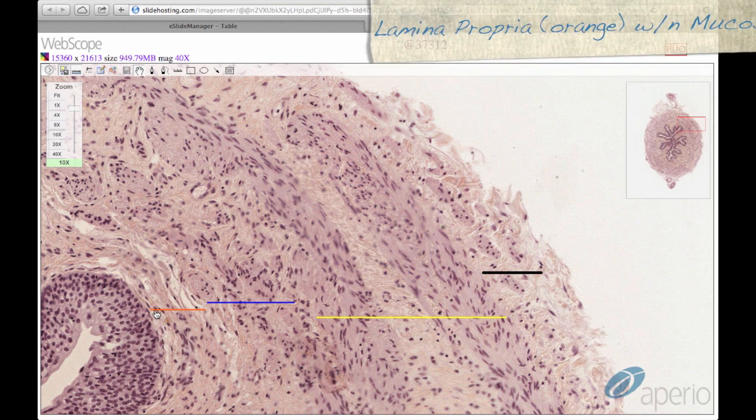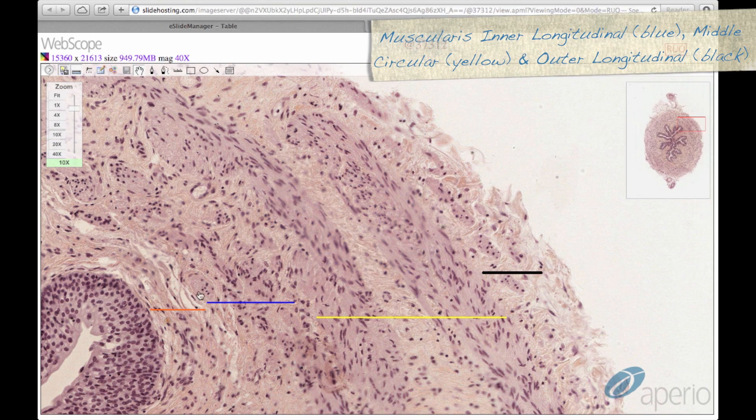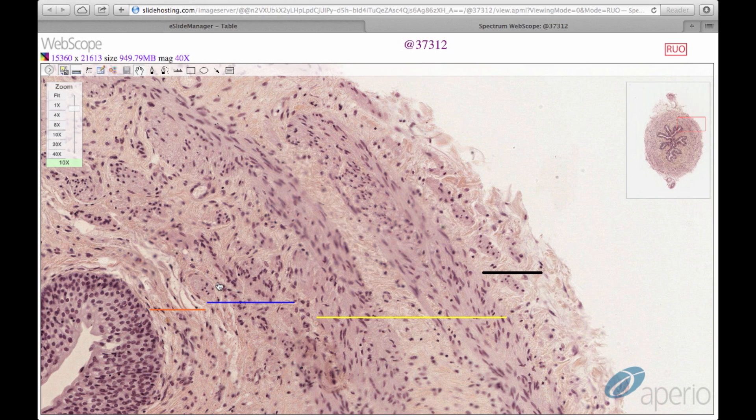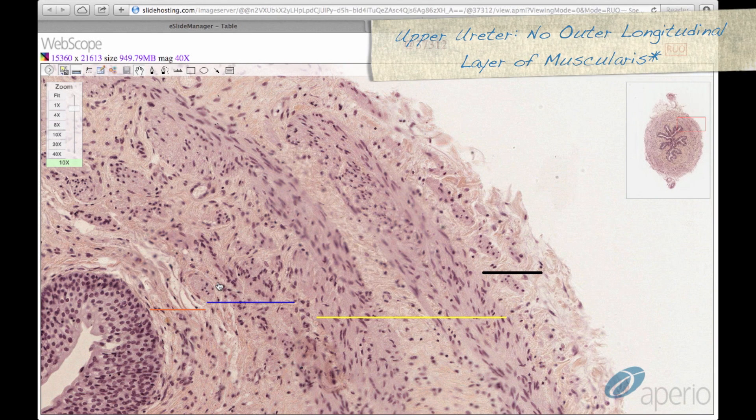In the lower ureter, there are three layers of the muscularis, the inner longitudinal, middle circular, and outer longitudinal, spanned by the blue, yellow, and black lines respectively. Please note that in the upper ureter, there is no outer longitudinal layer of the muscularis.